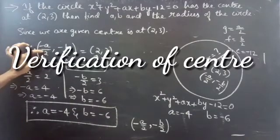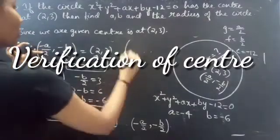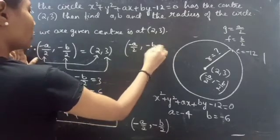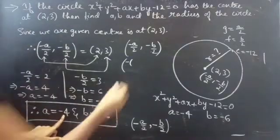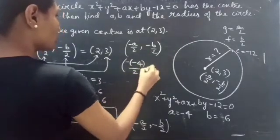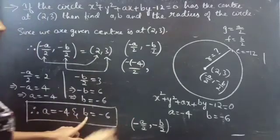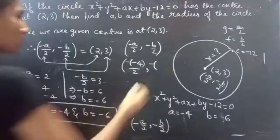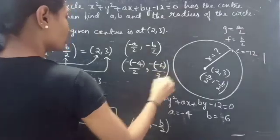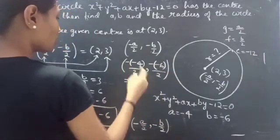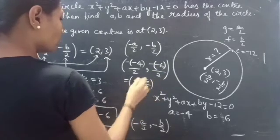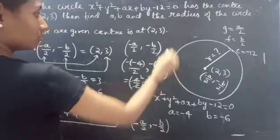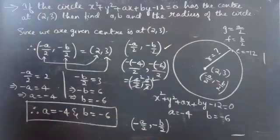What will be the center then? We have (-a/2, -b/2): substituting a = -4 gives -(-4)/2 = 4/2, and substituting b = -6 gives -(-6)/2 = 6/2. So the center is (2, 3), which is correct.